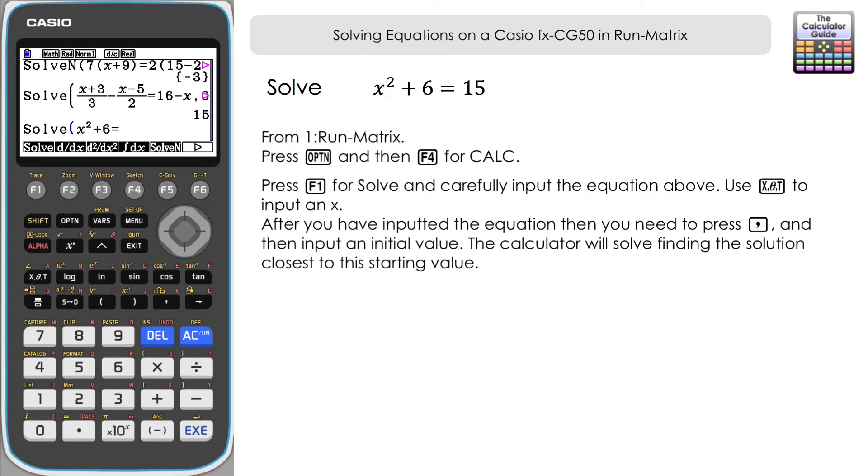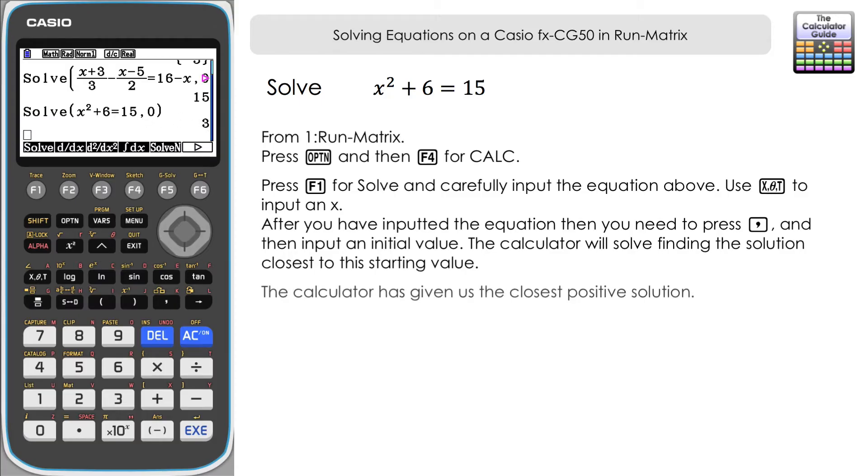So solve x² + 6 = 15. We'll add a comma, we'll make our starting value zero, and we won't define any limits. Close the bracket and execute. Now it's gone for 3 here. What we've got is 3 and -3 are equidistant from zero, so it's gone for the positive solution there. So how would we get the calculator to give us the negative one? What we can do is define a lower and an upper bound to solve this particular function.